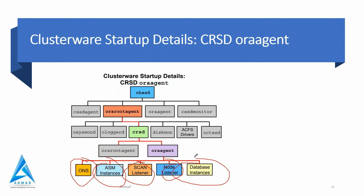Database instances register with the scan listener only as a remote listener, so the scan listener is configured as a remote listener, and the local listener is configured with the public IP and VIP as a local listener. Node listener: if DNS is used to resolve client connection requests to the cluster, a single GNS VIP is started and the IP address is assigned in the GNS server. If the cluster nodes support Oracle RAC database, the database instances are started. These five things are managed by the ora agent of the CRSD process.